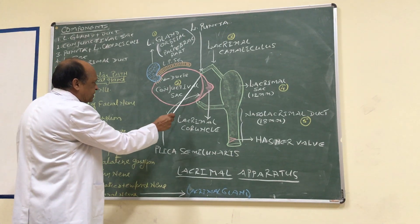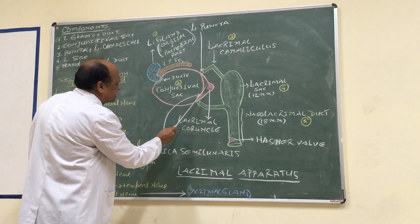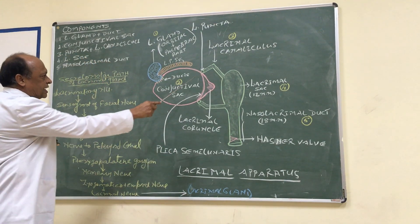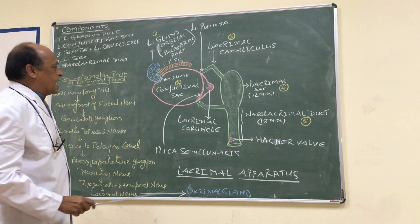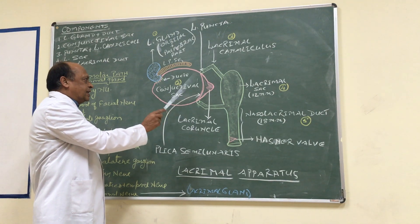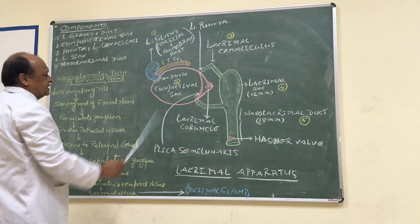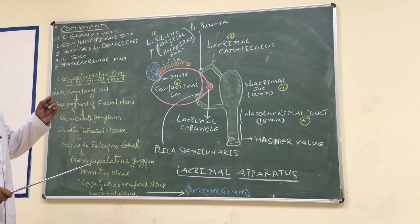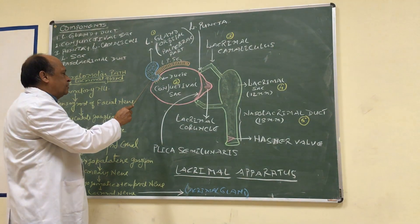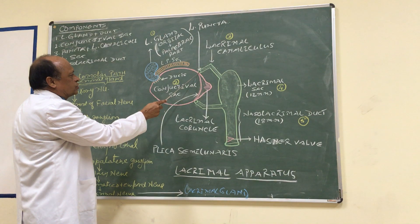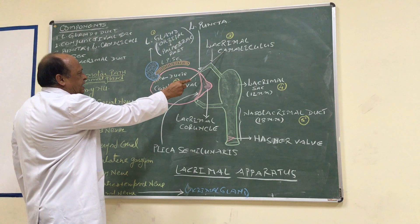When lacrimal fluid flows through the conjunctival sac, it runs from the lateral to the medial side towards the lacus lacrimalis. This triangular area at the medial angle of the eye is called the lacus lacrimalis. Here, the two puncta — minute openings situated at the junction of the lateral five-sixths and medial one-sixth of the lid margin — are present, and from these the lacrimal canaliculi begin.